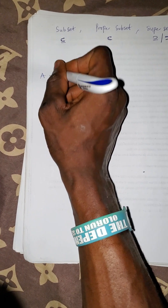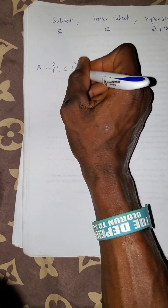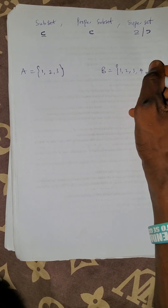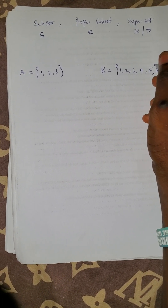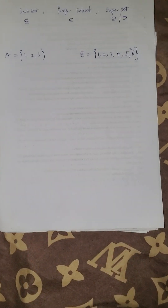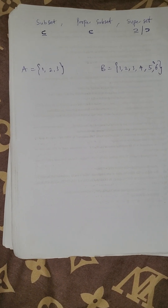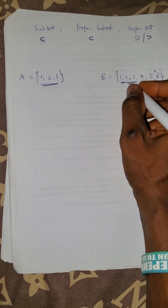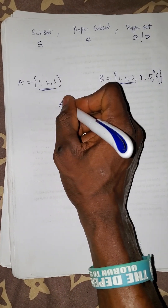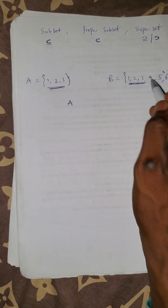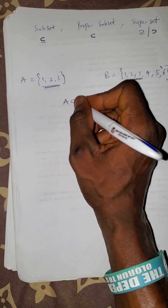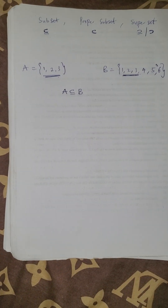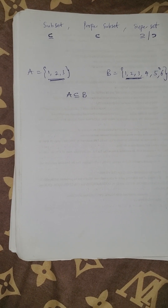Imagine you have set A to be {1, 2, 3} and you have set B to be {1, 2, 3, 4, 5, 6}. You observe that all the elements of A can be found in B. So I can say that the elements of A are part of B, and that A is a subset of B because A can be found in B.